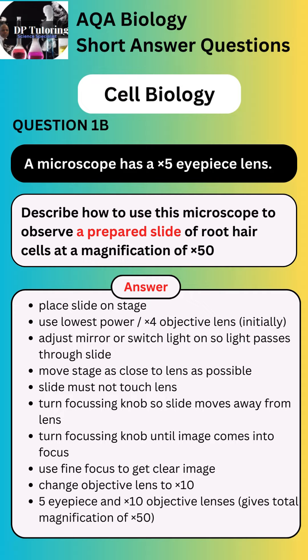You always begin by viewing at the low power objective lens, which is x4. You can then suggest focusing or turning the knobs to focus the image. Finally, you need to mention viewing at the x5 eyepiece lens and x10 objective lens to give a total magnification of x50. Take time to practice this method since it will likely be assessed in your examination.